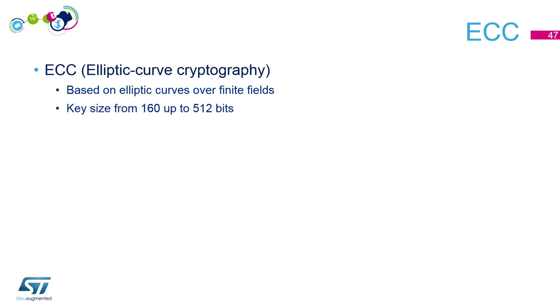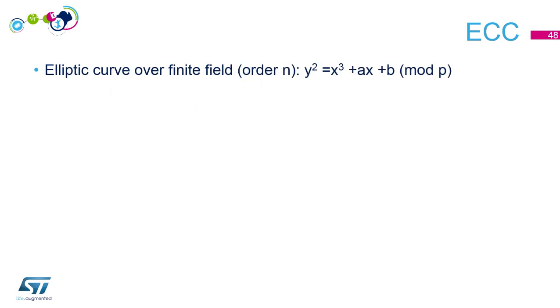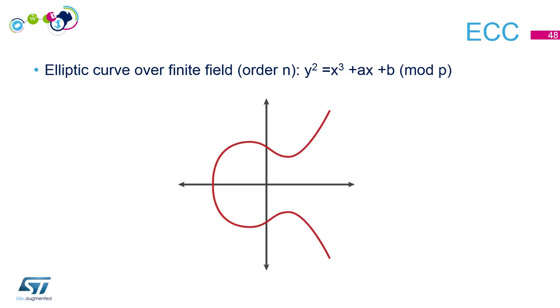ECC — Elliptic Curve Cryptography. It's based on elliptic curves over finite fields, with commonly used key sizes of 160 to 512 bits. The mathematics behind elliptic curves are quite complex. An elliptic curve satisfies a specific equation y² = x³ + ax + b. On this curve I define a generator point G. I then define a specific operation: draw the tangent through G, find the new intersection with the curve, take the symmetric of that point regarding the x-axis, and call this new point 2G.